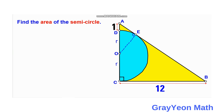Next, we compare triangle AEO versus triangle ABC. Notice they share a common angle at A, which we call alpha. Since triangle AEO is a right triangle it has a complement, which we call beta. For triangle ABC, since one angle is already alpha at A, the other acute angle must also be beta. Therefore these two triangles are similar, having three pairs of congruent angles: alpha, beta, and the right angle.